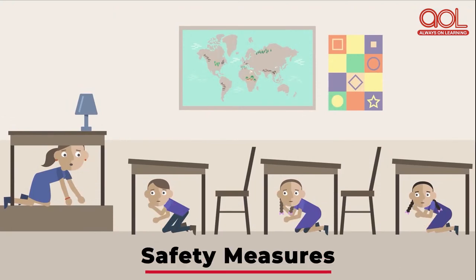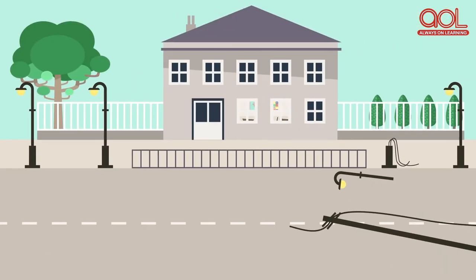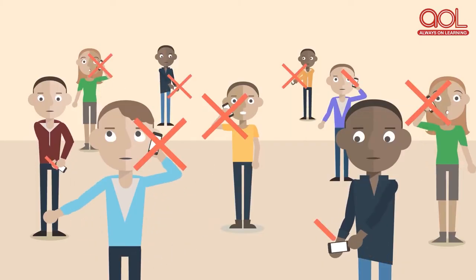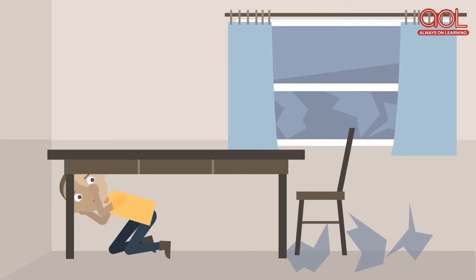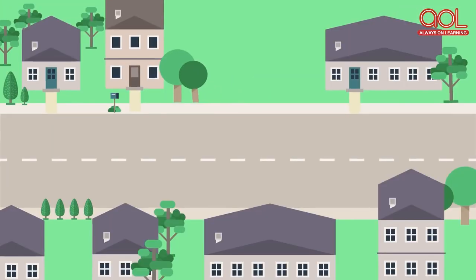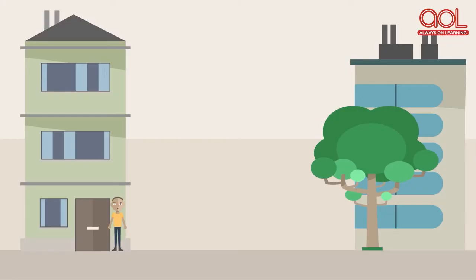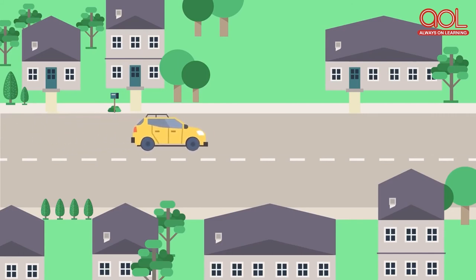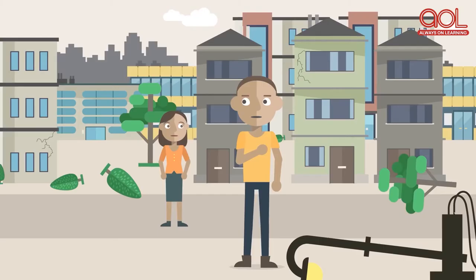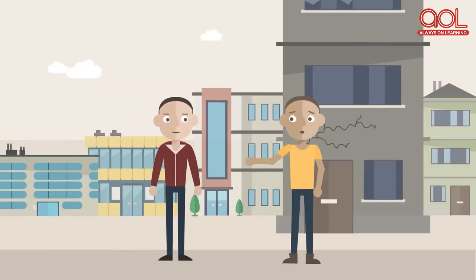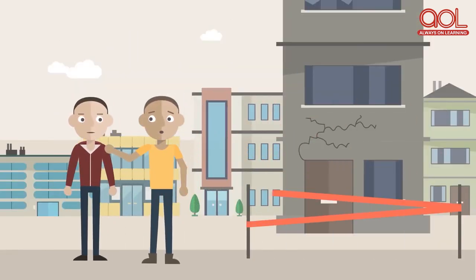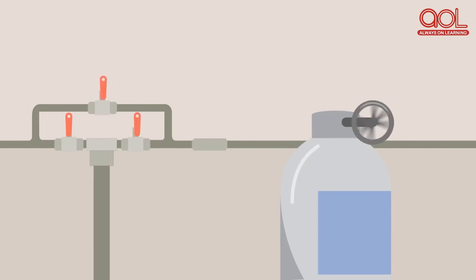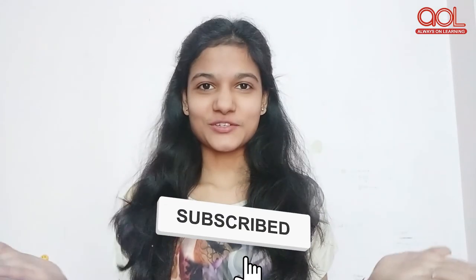An earthquake is a petrifying event, but by taking specific safety measures we can protect ourselves. Drop down onto your hands and knees, cover your head and neck, and hold on. Stay indoors until the shaking stops. Do not stand in a doorway. Look out for sturdy tables. If you are outside, find a clear spot to stay safe. If you are riding in a vehicle, stop as quickly and safely as possible. Be prepared for aftershocks. Do not enter a damaged building. Turn off the gas, electricity, and water.